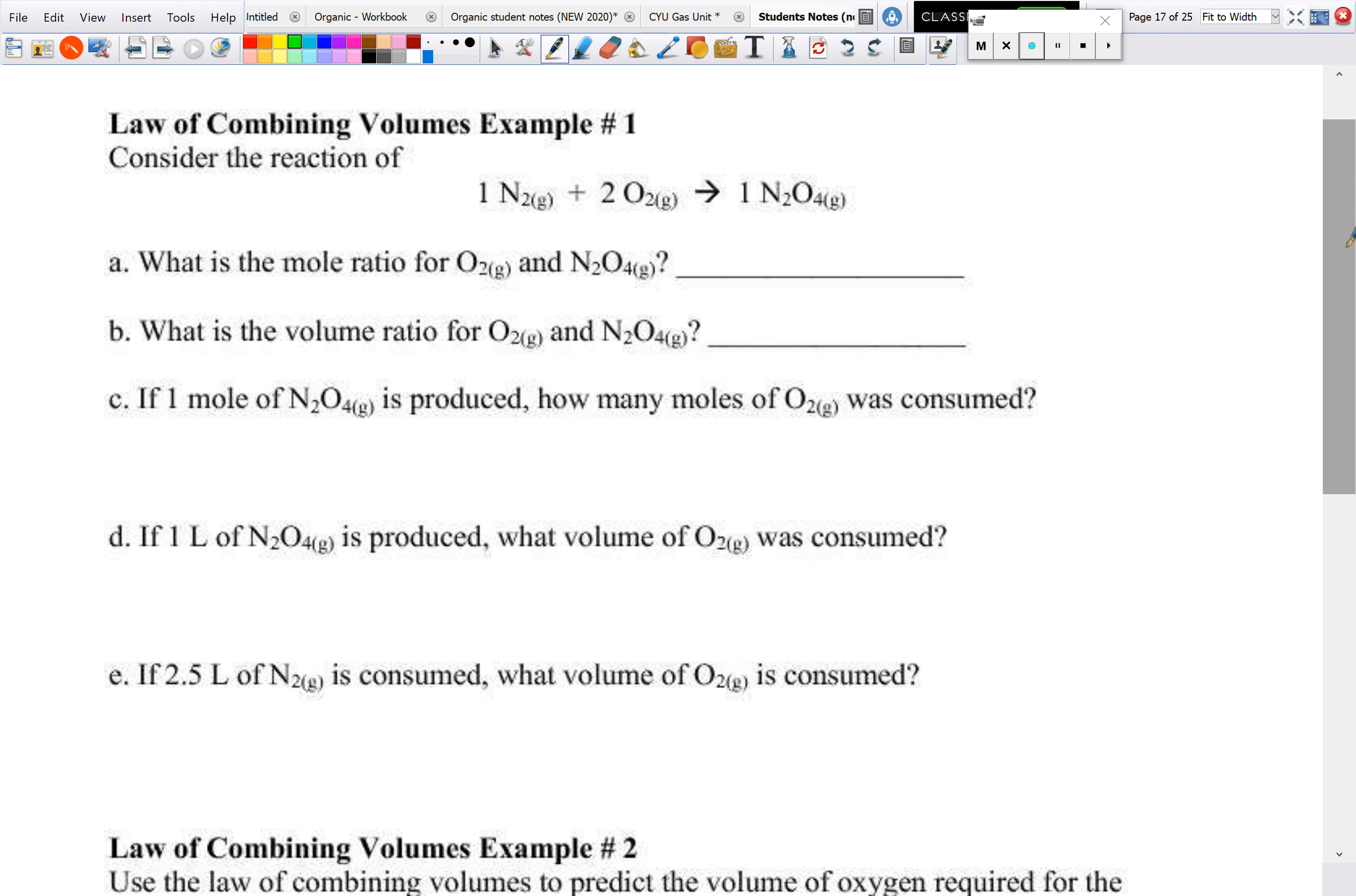So we're going to go through our first example here. So law of combining volumes is example one. So we're going to consider this reaction of nitrogen plus oxygen produces dinitrogen tetraoxide. Now we'll notice on the previous one, it said that they always react in simple whole numbers. And these simple whole numbers come from our balanced chemical equation right here. So that's why when we balance, we always have simple whole numbers so that we can have those. Now, this mole ratio is basically from our coefficients. So if we look at comparing oxygen and dinitrogen tetraoxide, we can tell that there's two oxygen molecules for every one dinitrogen tetraoxide. So we have two moles of O2 for every one mole of N2O4.